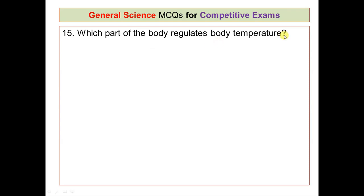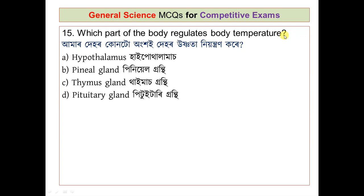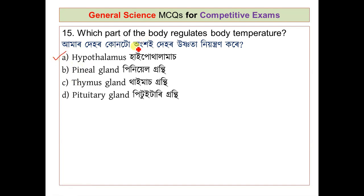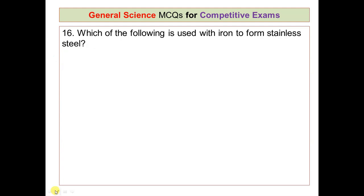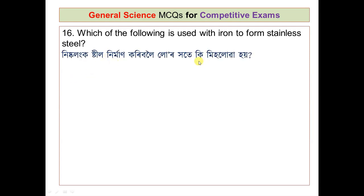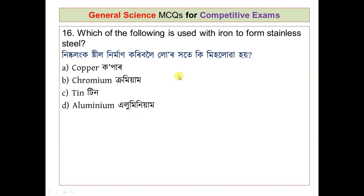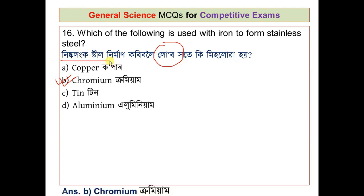Question number 15: which part of the body regulates body temperature? The options are hypothalamus, pineal gland, thymus gland, and pituitary gland. The correct answer is the hypothalamus. Question number 16: which of the following is used with iron to form stainless steel? The options are copper, chromium, tin, and aluminium. The correct answer is chromium.